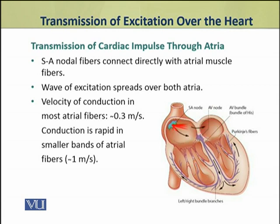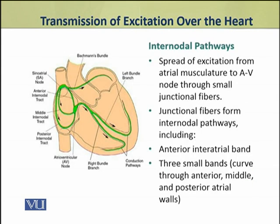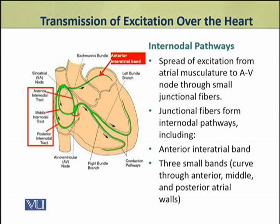However, conduction is rapid in smaller bands of atrial fibers, that is about 1 meter per second. The spread of excitation from atrial musculature to the atrioventricular node occurs through small junctional fibers. These junctional fibers form internodal pathways, which include an anterior interatrial band and three small bands curving through the anterior, middle, and posterior atrial walls.